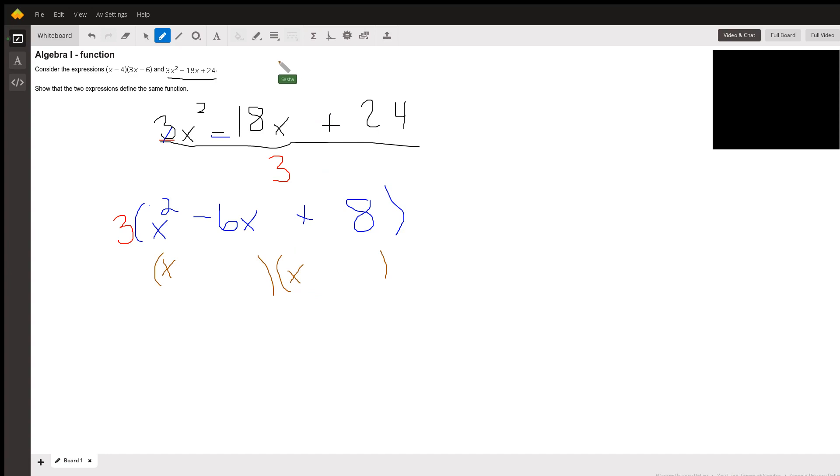Now my job is to take the last number, which is the 8, and I have to find two numbers that I can multiply together to get 8, but add to get negative 6. So we have negative, two negatives make a positive. So negative 4 times negative 2 is going to give me positive 8, which checks out here.